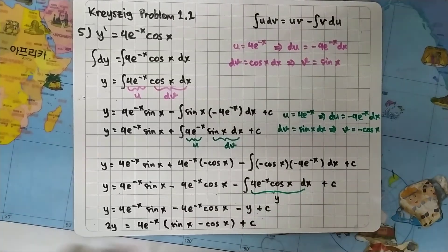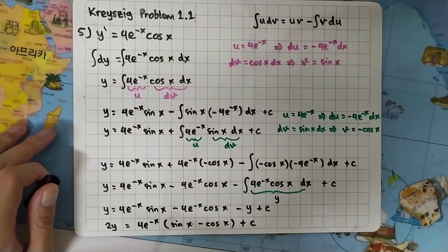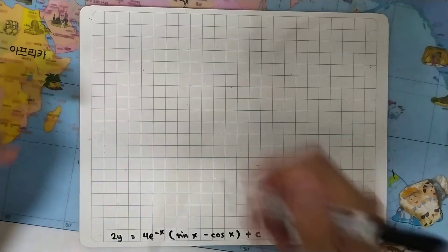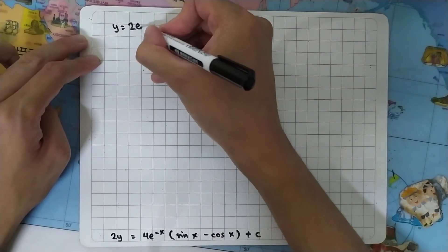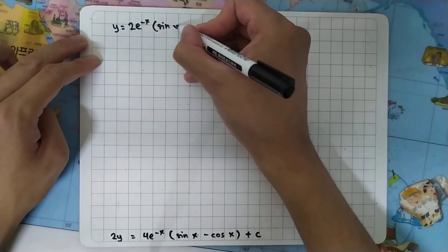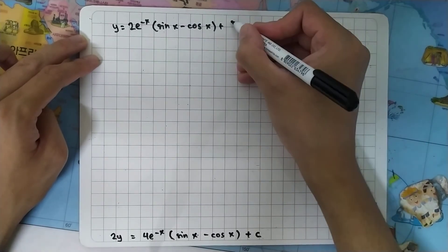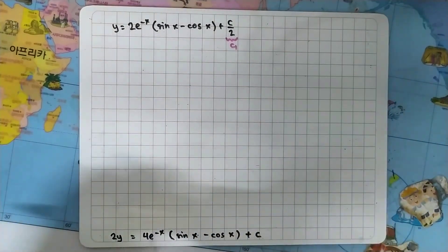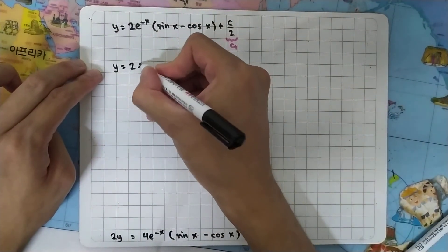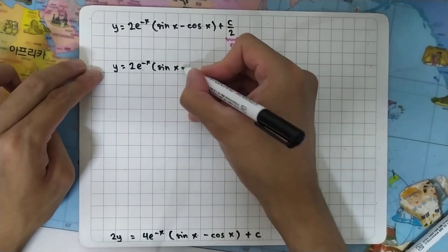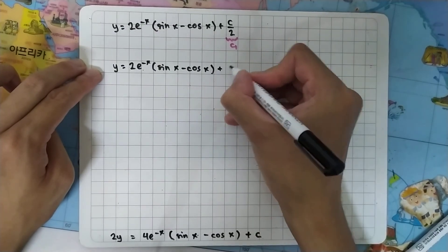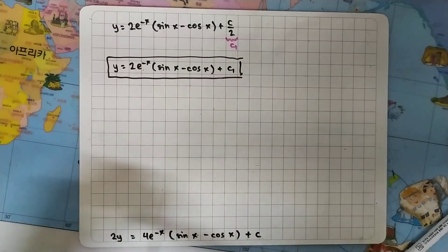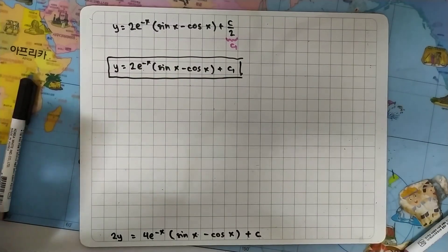Dividing both sides by 2, we get y equal to 2 e to the minus x times sin x minus cos x, plus c over 2. Since c over 2 is also a constant, we rename it c1. So the general solution is y equal to 2 e to the minus x times the quantity sin x minus cos x, plus c1. This completes question 5. Thank you for watching.